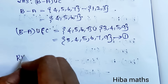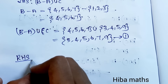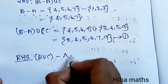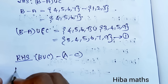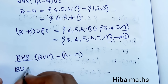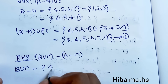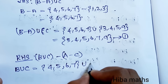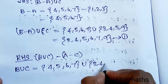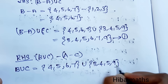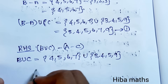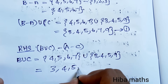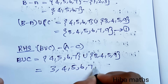RHS: B∪C = {4,5,6,7}∪{3,4,5,9} = {3,4,5,6,7,9}. Then A-C = {1,2,3}-{3,4,5,9} = {1,2}. So (B∪C)-(A-C) = {3,4,5,6,7,9}-{1,2} = {3,4,5,6,7,9}. Since LHS = RHS, (B-A)∪C = (B∪C)-(A-C). Hence proved.